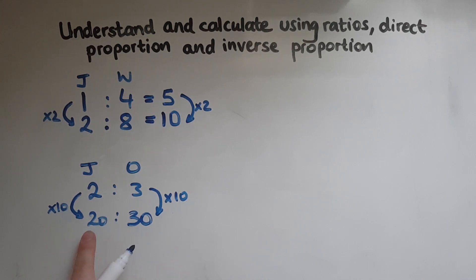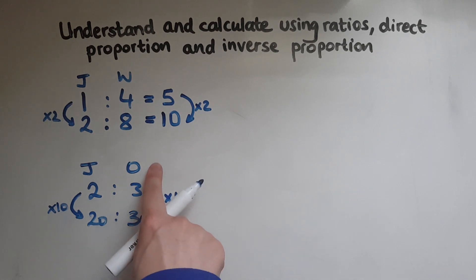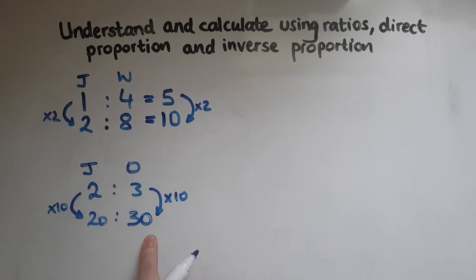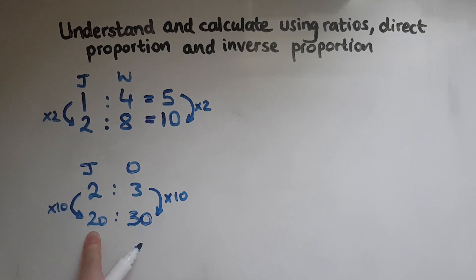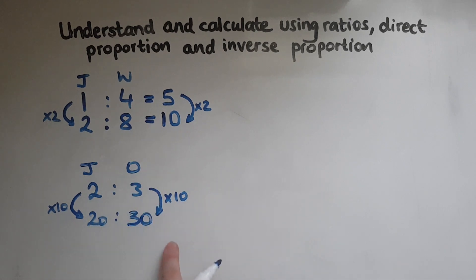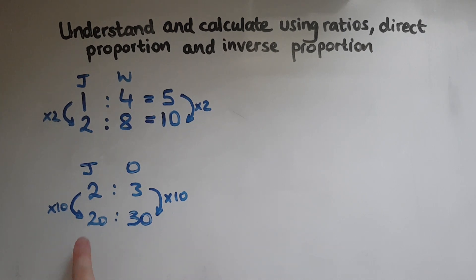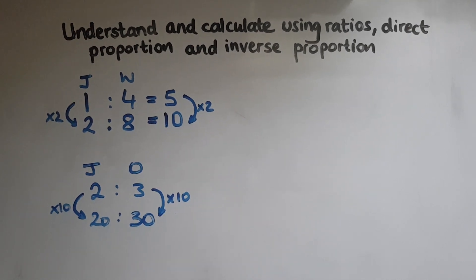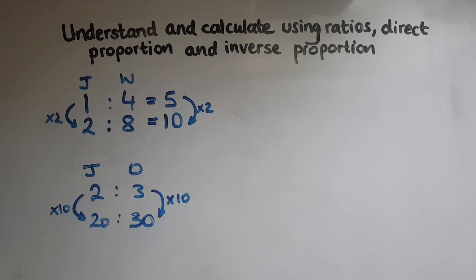Through the ratio and direct proportion, we're able to find how much there is in one of these two. So to find the specific amount, if you know how much Omar got, you can find how much Jake will get. Or if you know how much Jake got, you can find how much Omar will get as well.